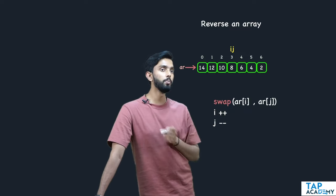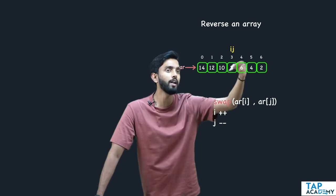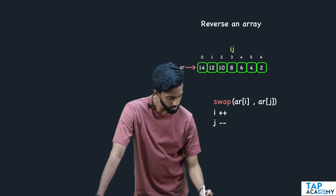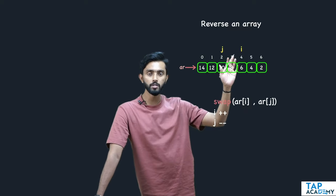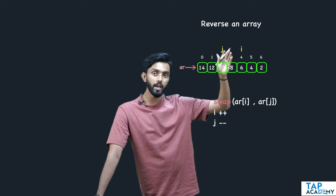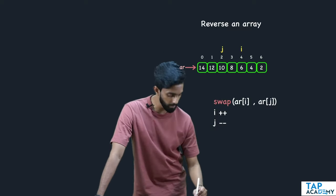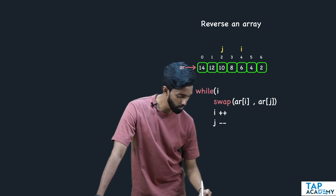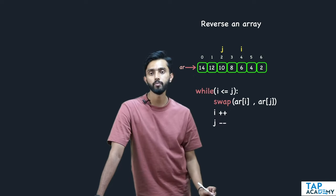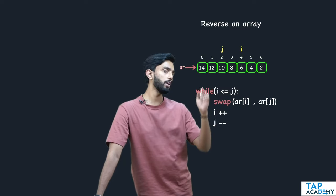Now there is no need to swap as such, because swapping will happen with itself — the ith element and jth element is 8 and 8, it will stay there. After that, j decrements and i increments. You'll notice the next time j has become less than i, so that is your termination condition. This should happen as long as i is less than or equal to j — that's your while condition, keep repeating till then.